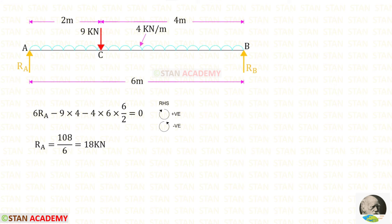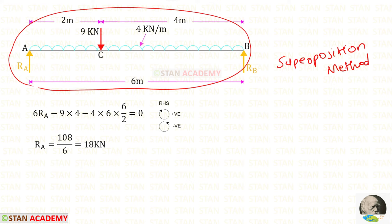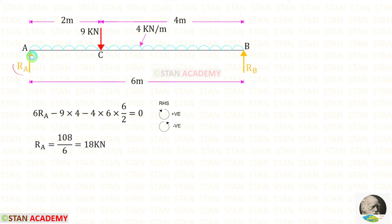Now we are going to draw the bending moment diagram. The easiest method is the superposition method. First we convert the fixed beam into a simply supported beam. You can see that I have converted the fixed beam into a simply supported beam, and now we draw the bending moment diagram for this simply supported beam by first finding the reaction Ra, taking moments about B.